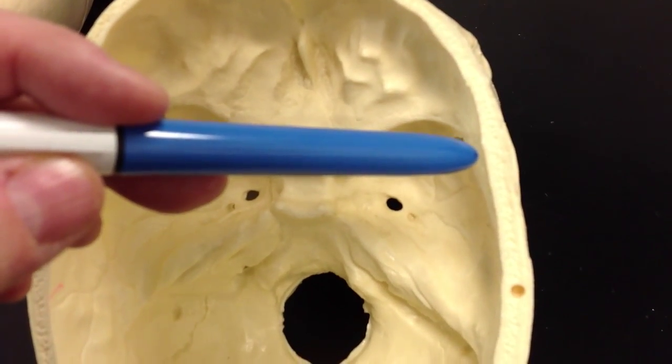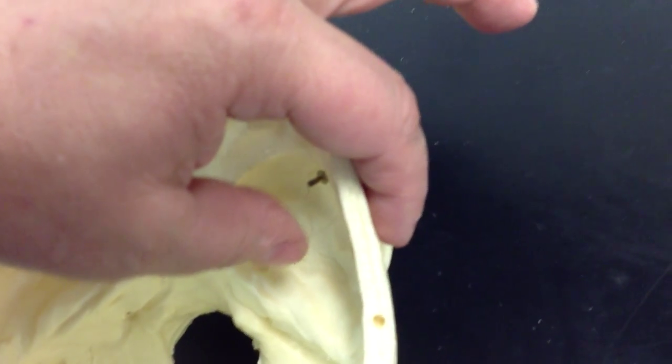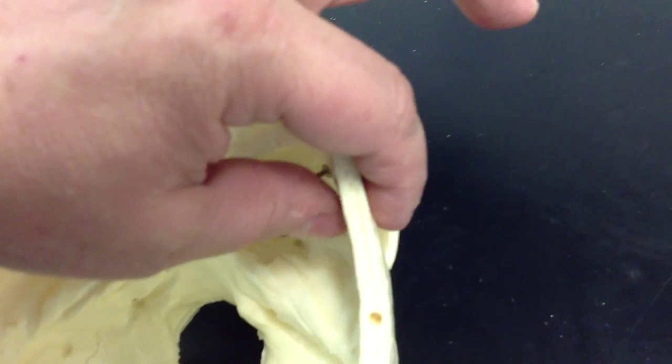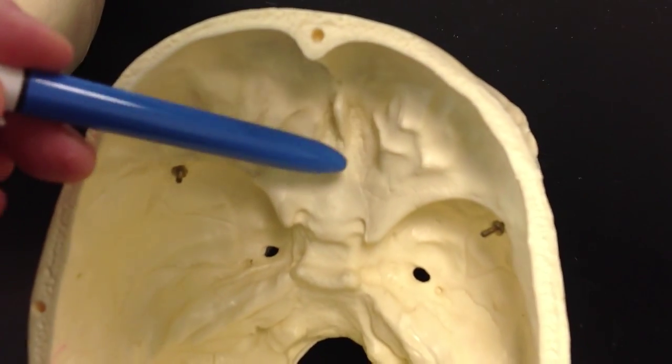Right along here, we're going to have our sphenoid bone. Now, if we take our finger and we touch the greater wing of the sphenoid on this side and we bring our fingers together, you'll see where the sphenoid bone is on the interior of the skull.